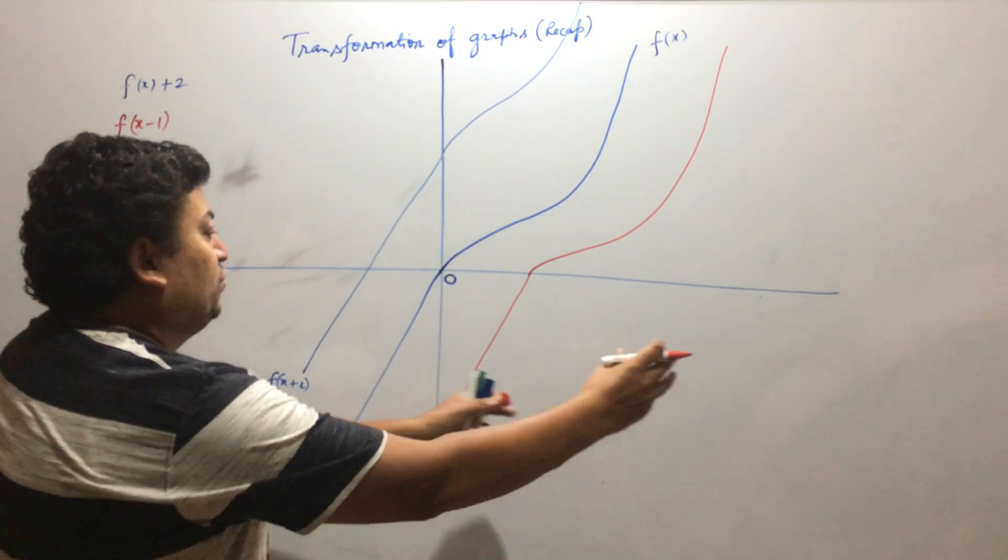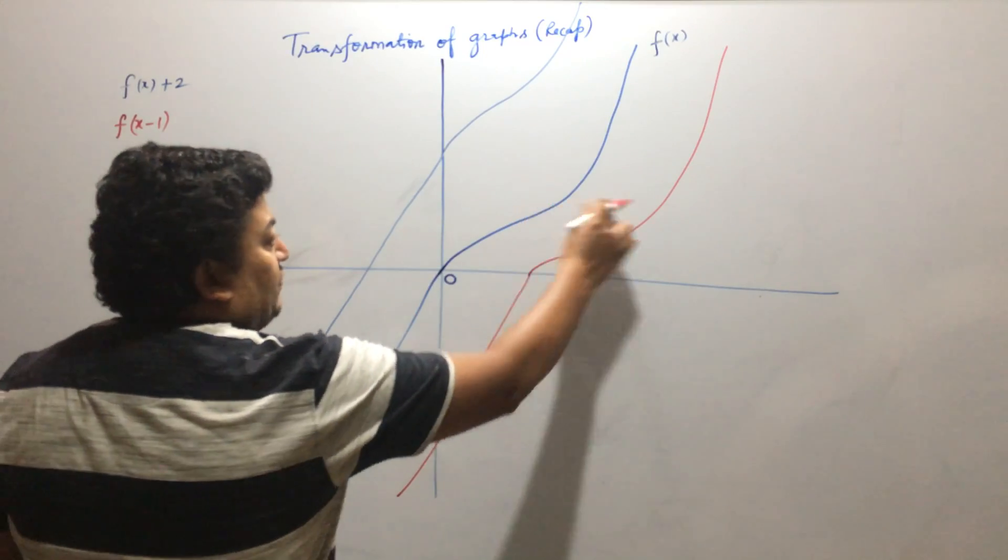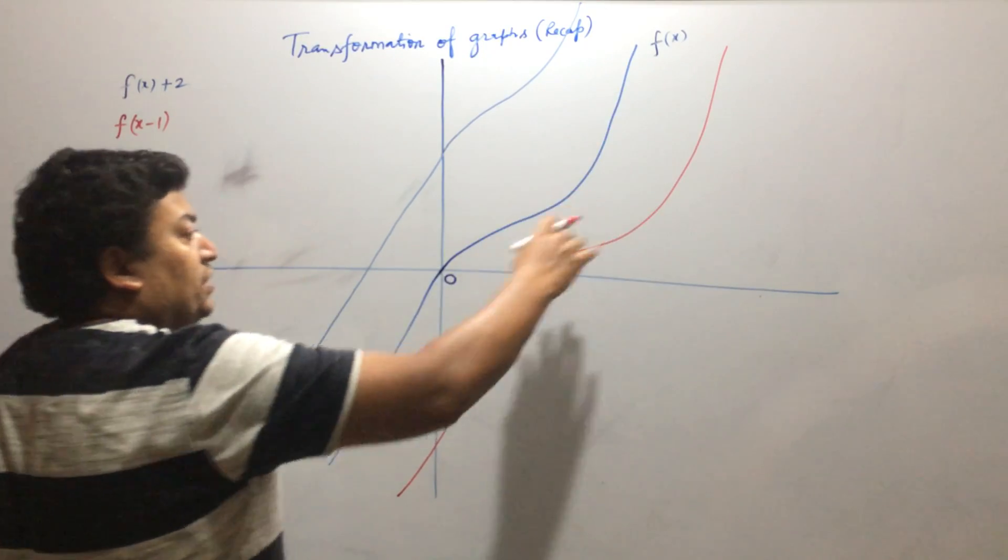The whole graph is shifted 1 unit towards right. You can see that each and every point is shifted 1 unit towards right.